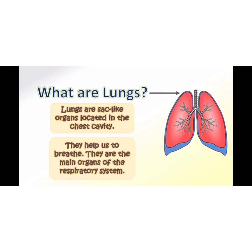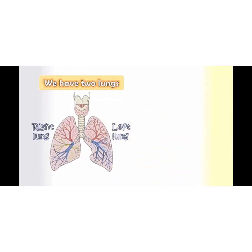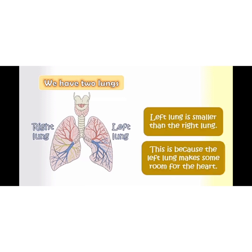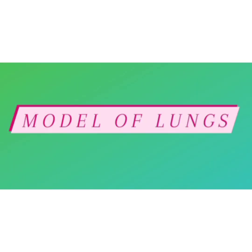Lungs are the main organs of the respiratory system. We have two lungs — the right lung and the left lung. The left lung is smaller than the right lung because the left lung makes some room for the heart. Now let's learn how to make an easy working model of lungs.